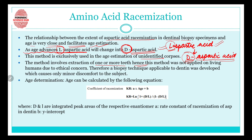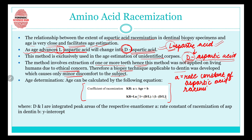This method is exclusively used for age estimation in unidentified corpses. Originally it involved extraction of one or more teeth, raising ethical concerns for use on living individuals. Therefore, a special biopsy technique applicable to dentine was developed, causing only minor discomfort. The formula used determines the coefficient of racemization, where A is the rate constant of aspartic acid racemization in dentine, B equals the y-intercept, and D and I are integrated peak areas of the respective enantiomers.